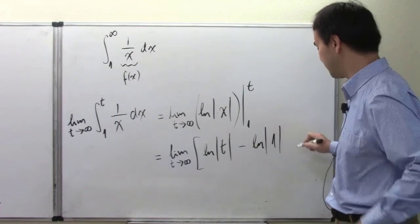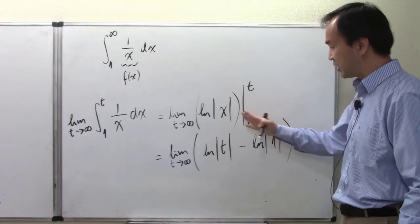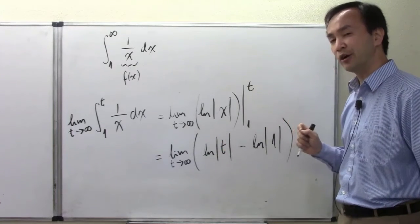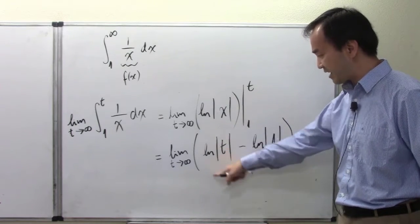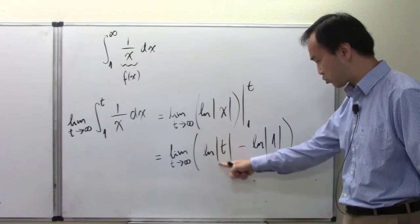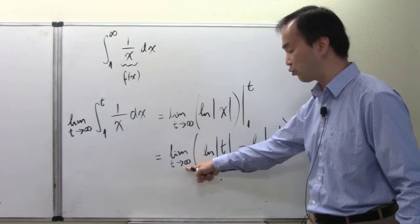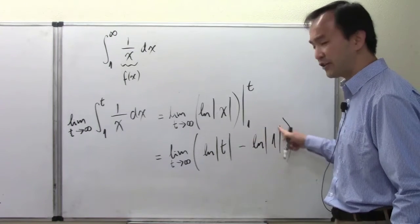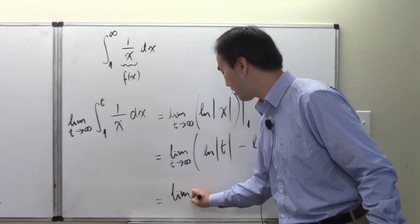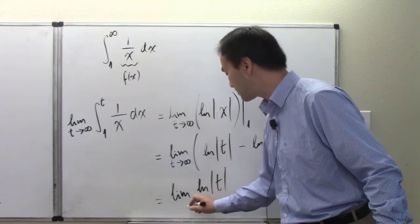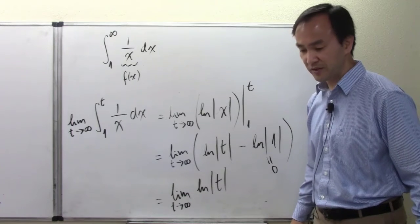Natural log of one is zero, so in the next step I only need to find the limit of natural log of t as t approaches positive infinity. Knowing the graph of natural log of x — as t gets further to the right, the logarithm function keeps rising vertically.